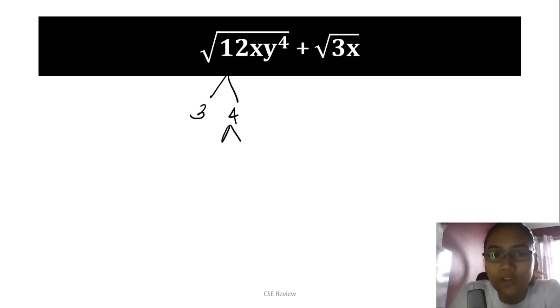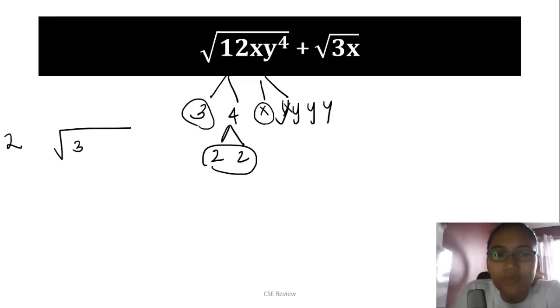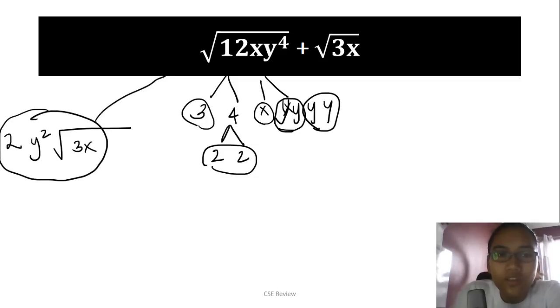You have 3 times 4. This is 2 and 2. There's one x. Four y's: y, y, y, y. Extract everything possible. You have a pair of 2's, so you extract 2. There's one 3, which stays inside. The x has no pair, so it stays. With y, you have one, two pairs, so y². The answer is 2y²√(3x). Now what do you do next?